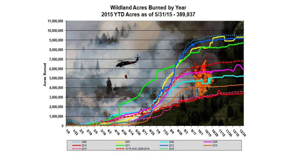Looking at statistics of wildfire up to 28th May, in the present year there is a loss of 8 lakh acres, and the highest recorded loss was in 2006 at nearly 8 million acres.